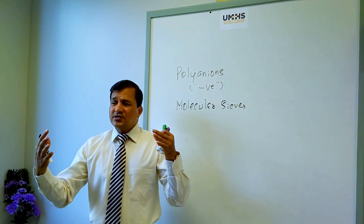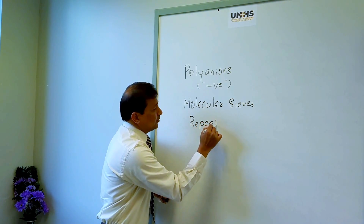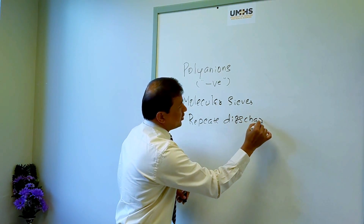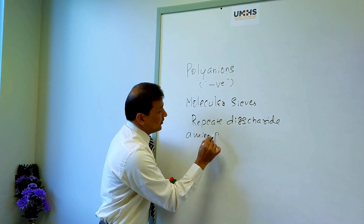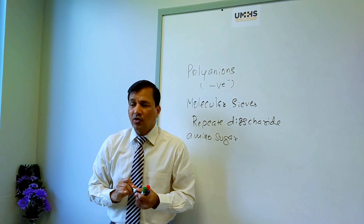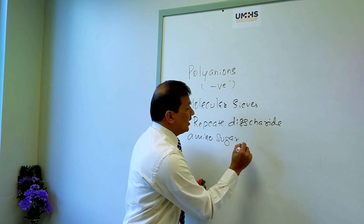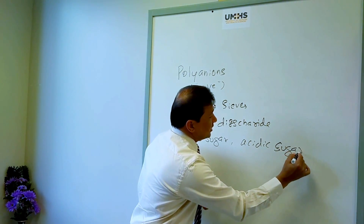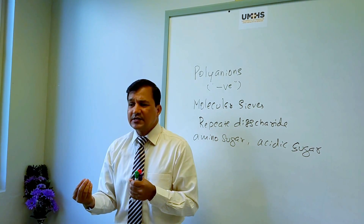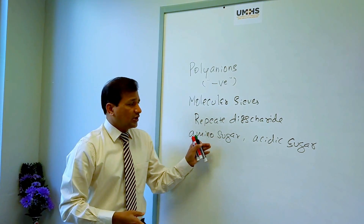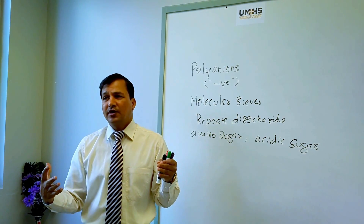The general structure of a proteoglycan or glycosaminoglycan contains a repeated disaccharide. Within that repeating disaccharide, one monosaccharide is an amino sugar — either N-acetylglucosamine or N-acetylgalactosamine — and the other is an acidic sugar, which can be iduronic acid or glucuronic acid. These amino and acidic sugars together form the repeating disaccharide unit that makes up the glycosaminoglycan chain.